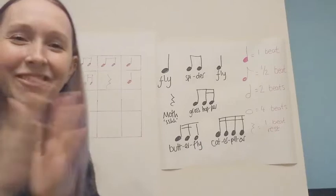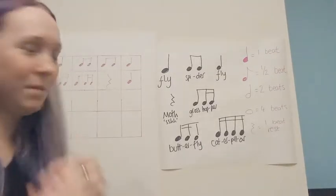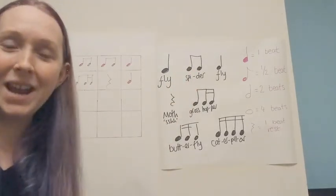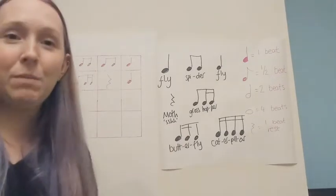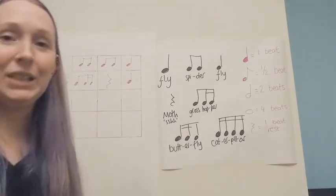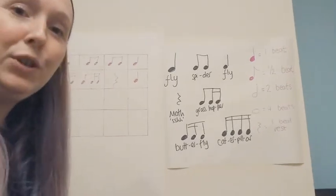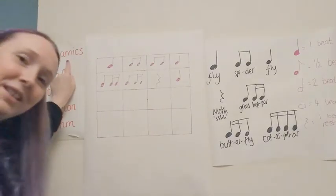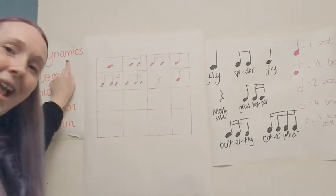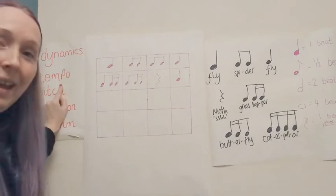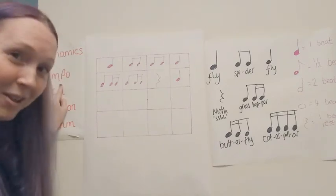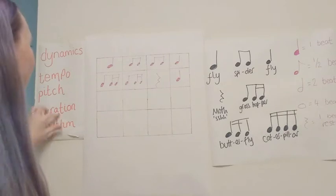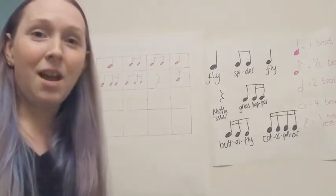Excellent — give yourselves a round of applause. Hopefully you managed to fit in your rhythms and had a go at using a few different rhythms in your own version. How could we make this more interesting instead of just clapping rhythms? I'm sure you have used these words before — dynamics means loud and quiet, tempo is fast and slow, pitch is high or low, and duration and rhythm are tied in with how long our notes are.